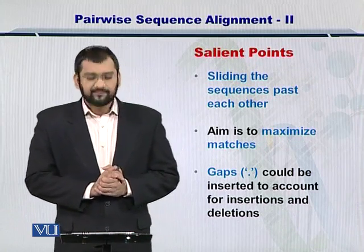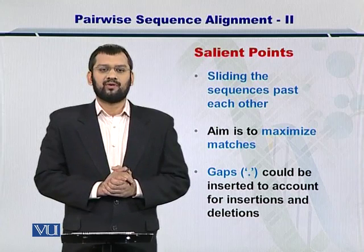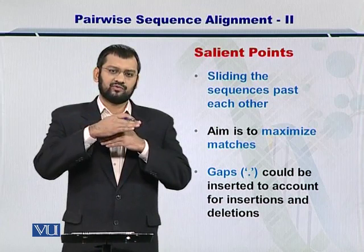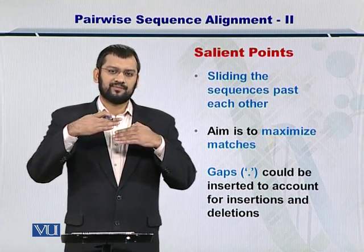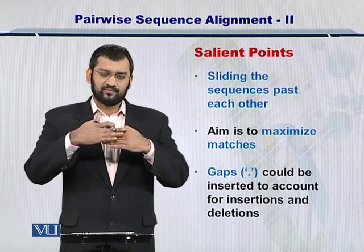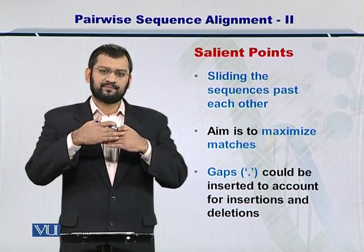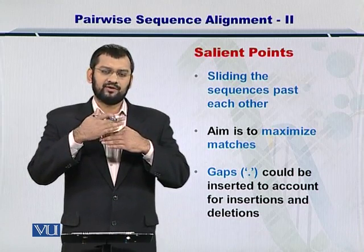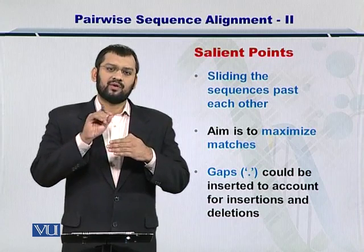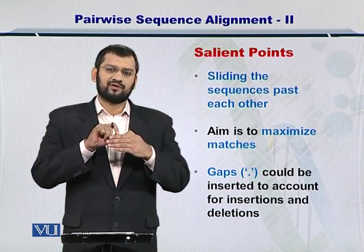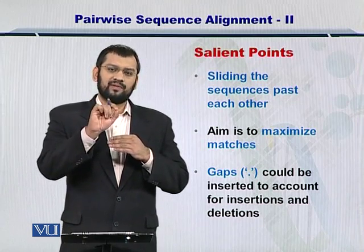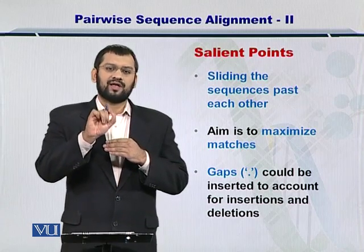The process starts with sliding the two sequences against each other. Once you do that, you try to maximize the matches between these two sequences. During this maximization of the matches, if there is a situation where there is an extra amino acid or nucleotide in one sequence, then in the corresponding sequence you place a dot. This is called a gap.